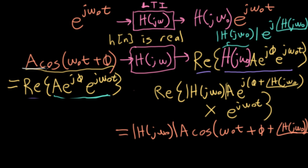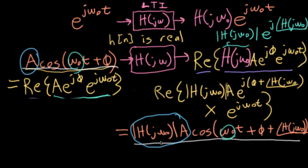So a cosine went in and a cosine came out. The cosine has the same frequency, but what's happened to the amplitude? The amplitude got multiplied by the magnitude of the frequency response evaluated at omega naught, and then the phase had something added to it, namely the angle of the frequency response evaluated at the frequency omega naught. Cosine in, cosine out.